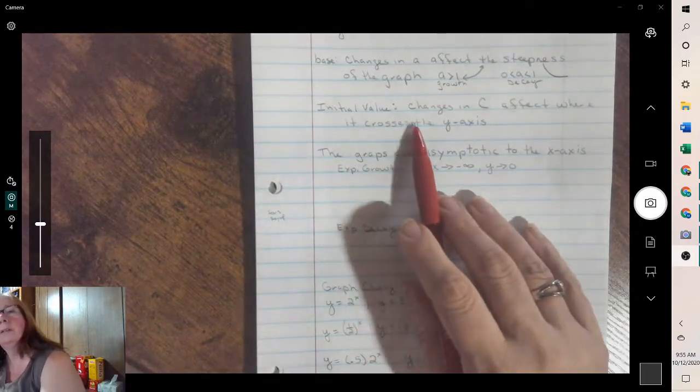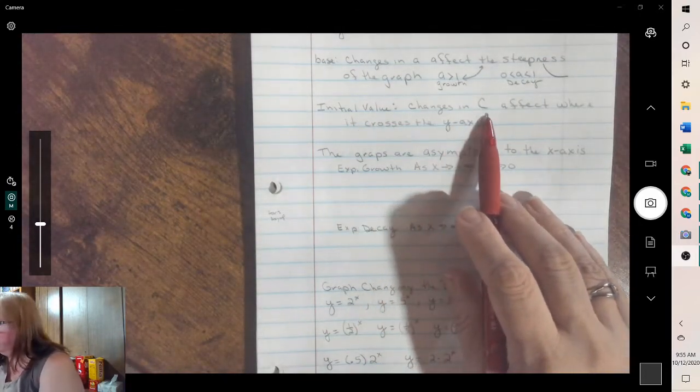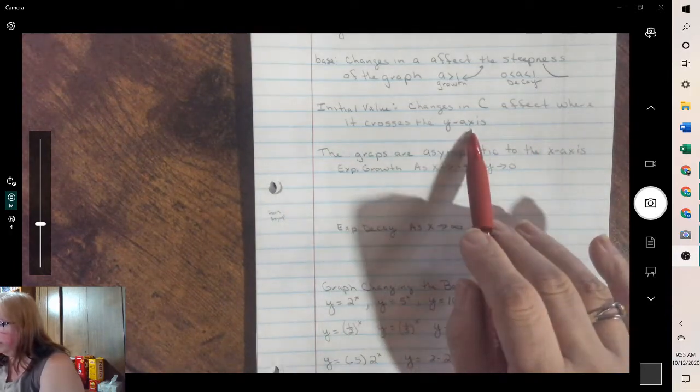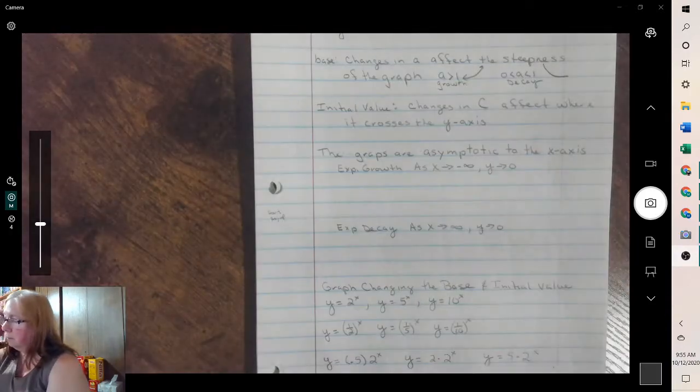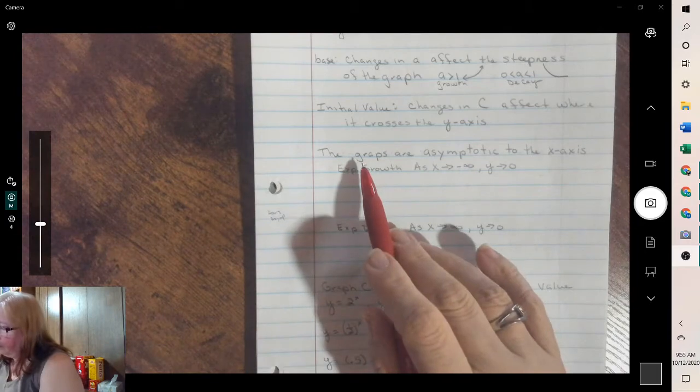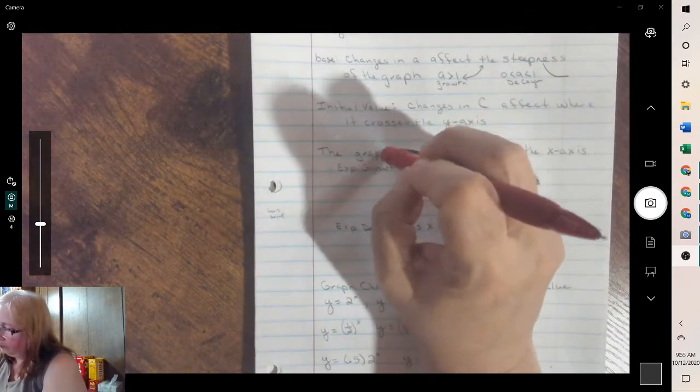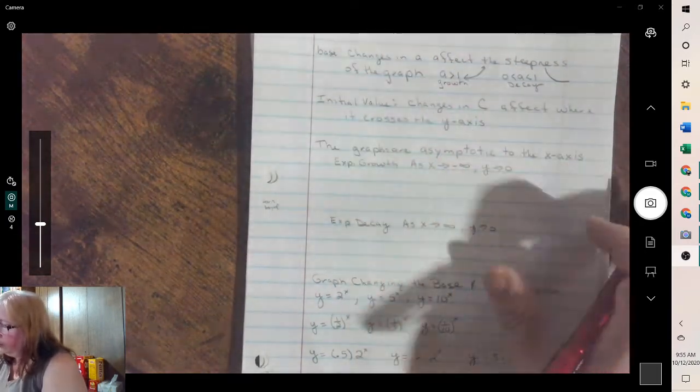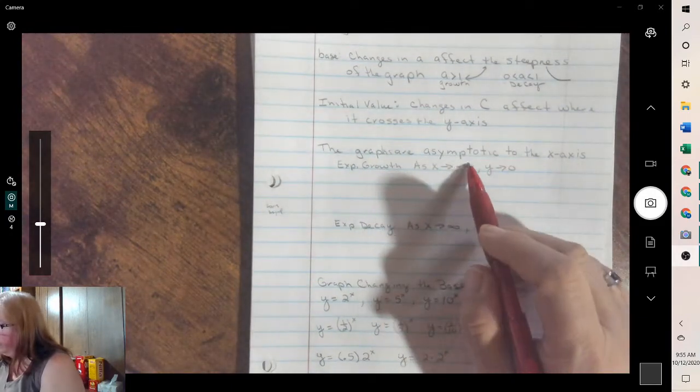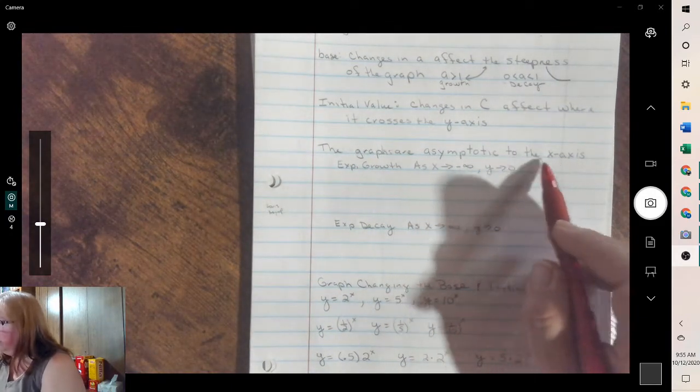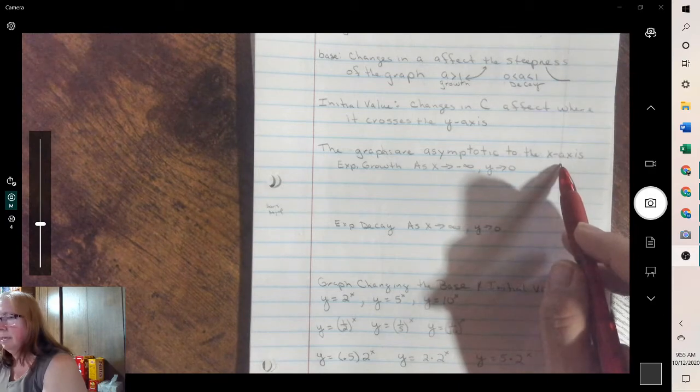The initial value, the changes in c affect where it crosses the x-axis. The graphs are asymptotic. What that means is they both get close to the x-axis.